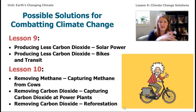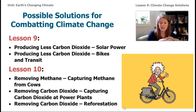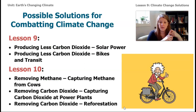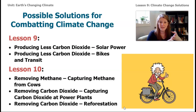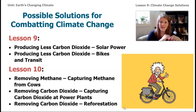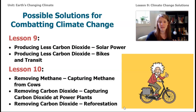In lesson nine, we're going to look at the possible climate change solutions of producing less carbon dioxide through solar power and producing less carbon dioxide through bikes and transit. Then in lesson ten, we'll talk more about the other solutions, which are about removing carbon dioxide and methane from Earth's atmosphere.